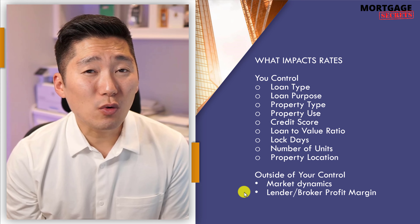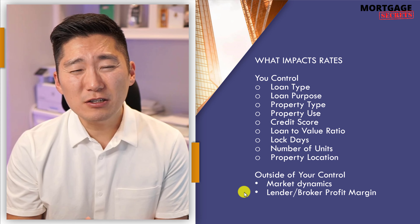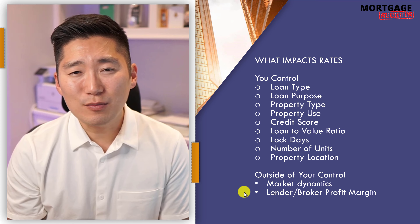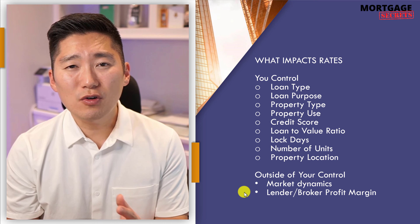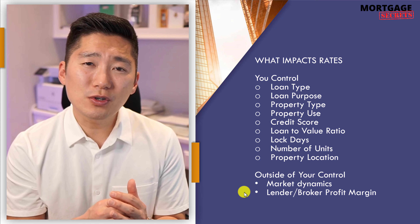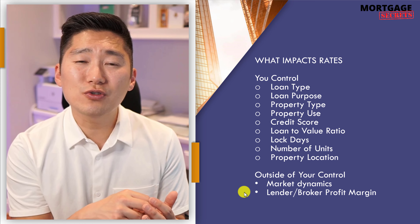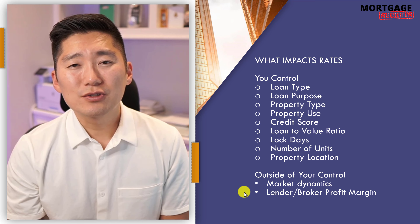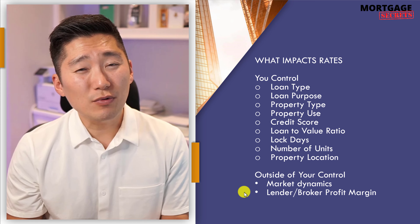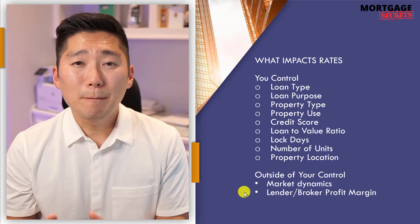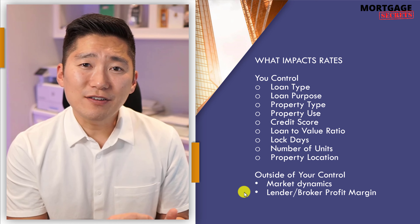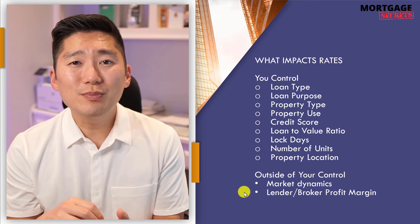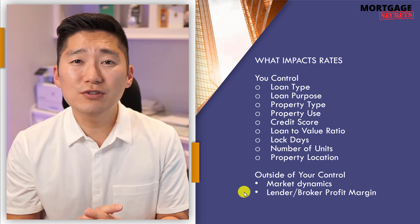The second topic is lender or broker profit margin — and I could include banks here too. This industry is not a not-for-profit industry, so a lender or broker is going to have a specific margin or revenue that they're going to try to earn per transaction. This is going to vary from lender to lender, so you're not really going to have control over this. But if you've identified your set of mortgage lenders based on part one, you should have a good mix of lenders to choose from.